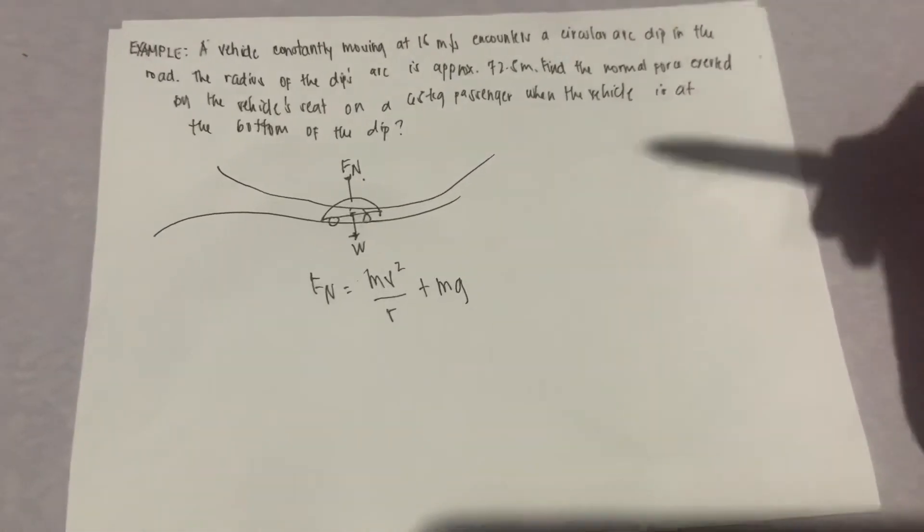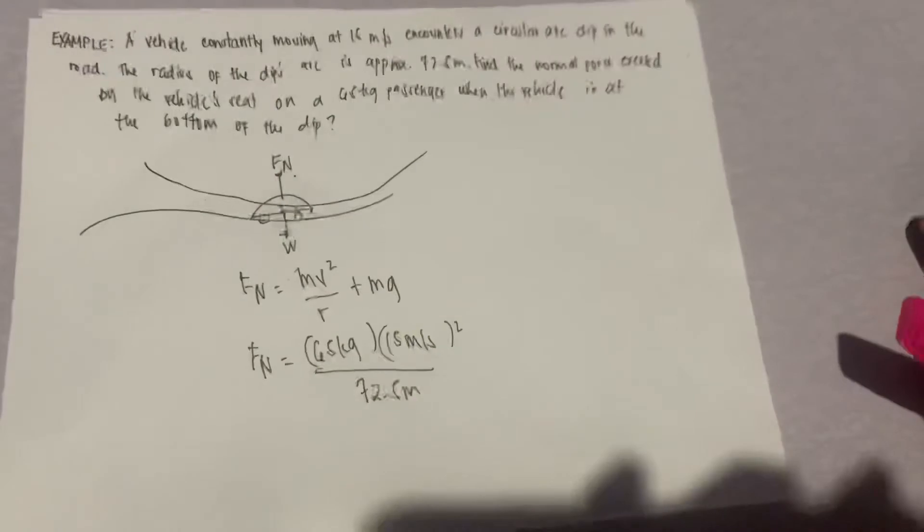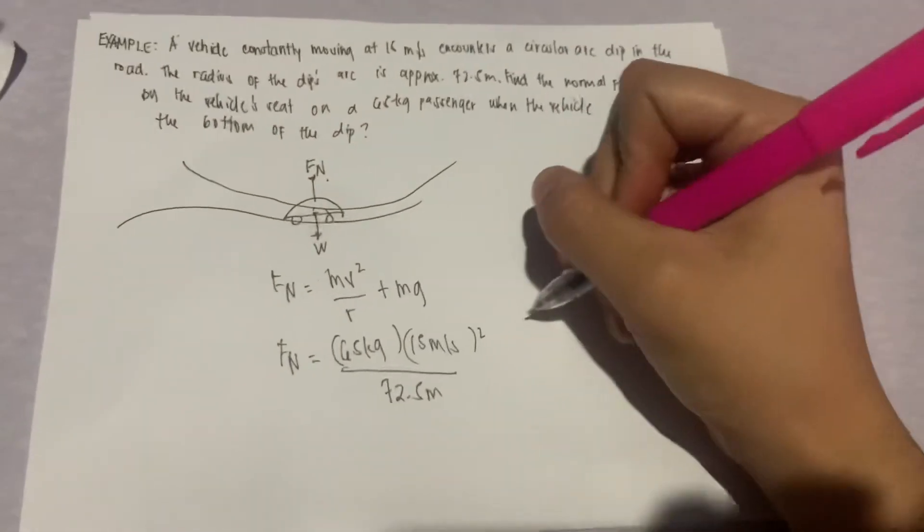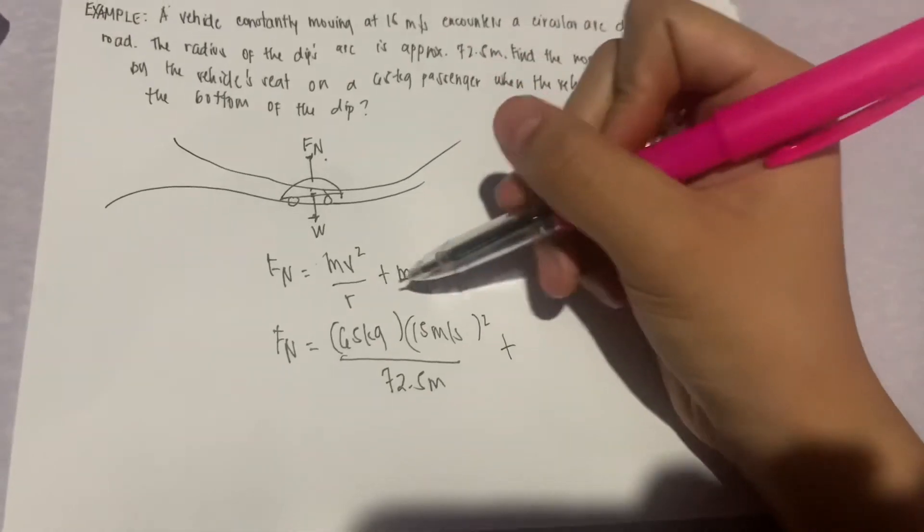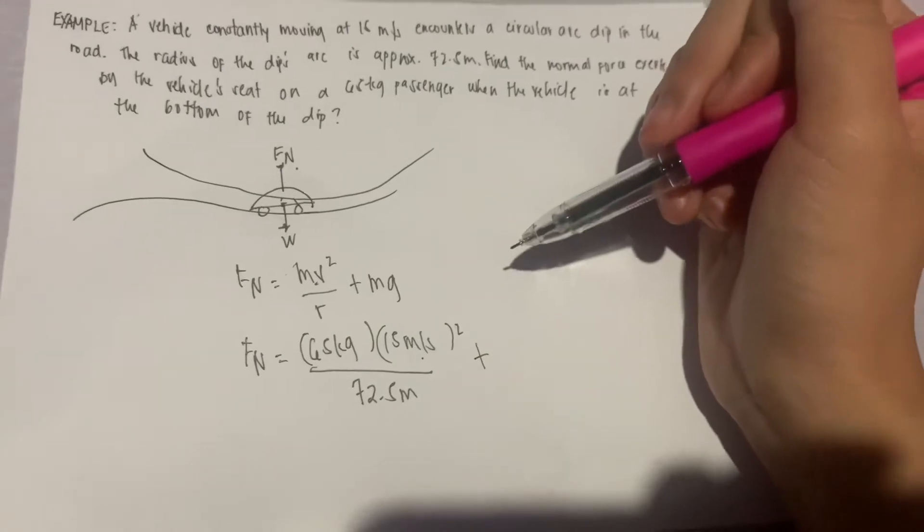given na lahat yung mga hinahanap na quantities, so meaning magdadirect substitution tayo. So ayan na siya, sinubstitute ko na yung mass na 65 kilograms, yung velocity na 15 meters per second quantity squared,